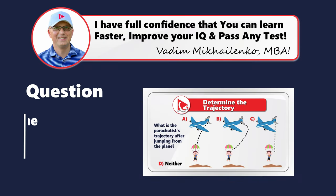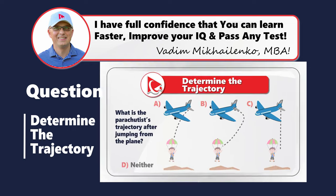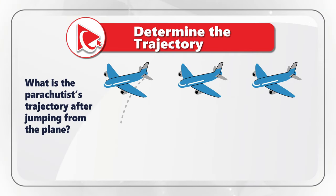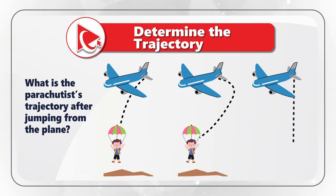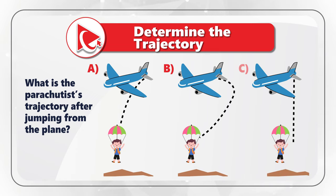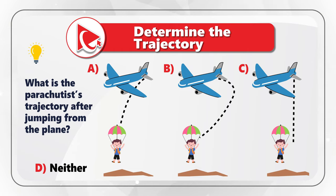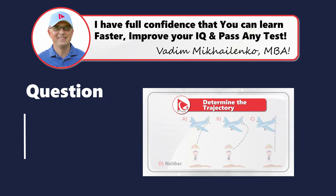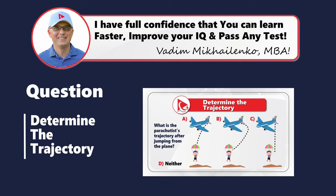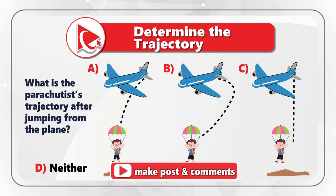Let's look at the question where you need to determine the trajectory after a parachutist jumps from a plane. Based on wind and other external conditions there would be multiple possibilities, but you need to select one out of four possible choices — A, B, C, or D for neither one. Take a close look at the parachutist's trajectory after jumping from the plane. I'm moving forward to share my version of the answer, and if you have a better way to solve it, please post in comments.